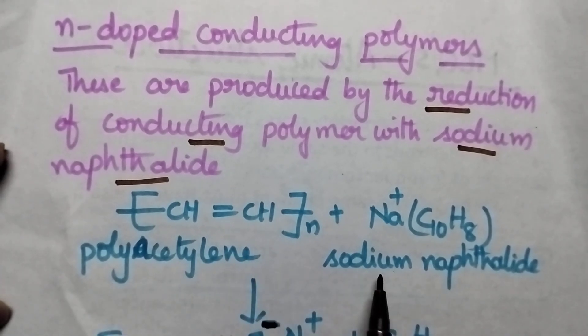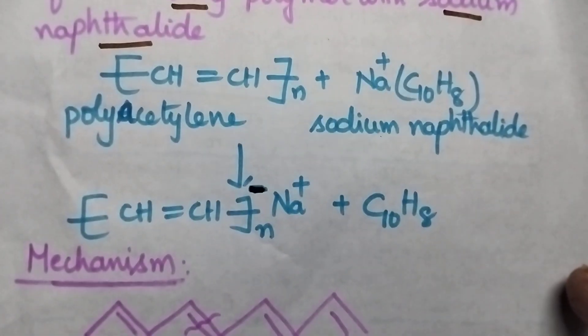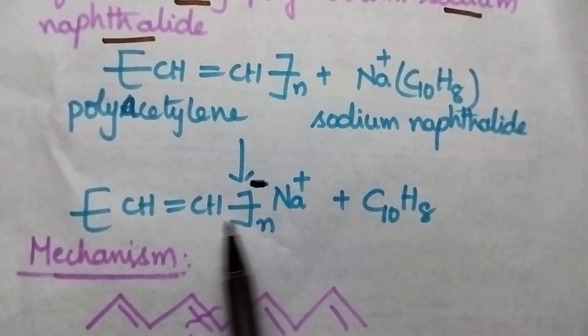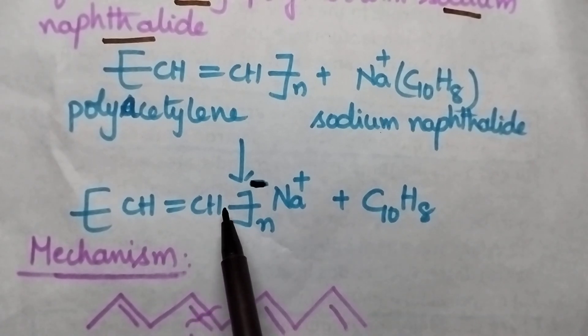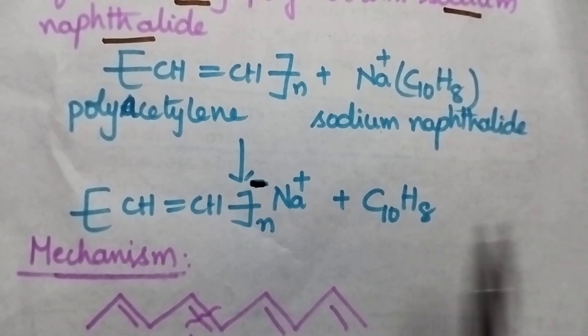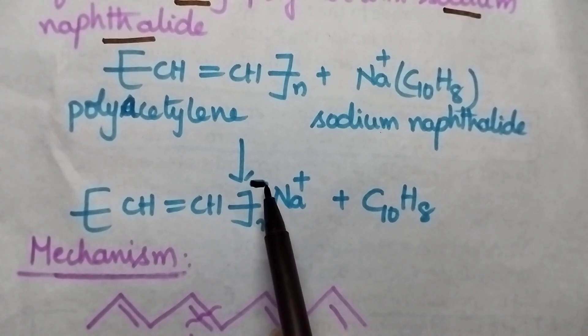Whenever polyacetylene is treated with sodium naphthalate, it results in the formation of n-doped conducting polymer where polyacetylene contains the negative charge. Because of this negative charge, excess electrons will be present and they will improve the conductance of polyacetylene.